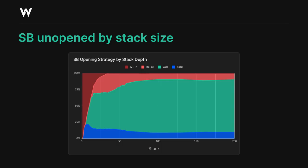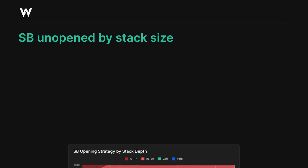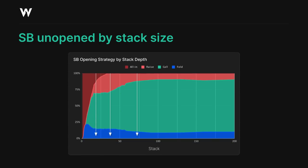Playing only 60 to 70% of hands here would be giving up a lot of EV to the big blind. With this graph, we can establish fairly easily what our pivot points are. We can identify three specific stack sizes at which the small blind strategy shifts quite significantly. These stacks are roughly 70 big blinds, 35 big blinds, and 18 big blinds — conveniently, each is roughly half of the next.